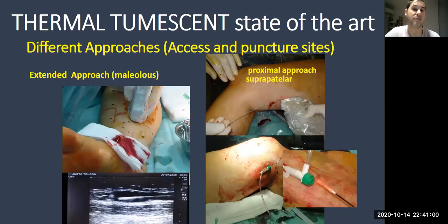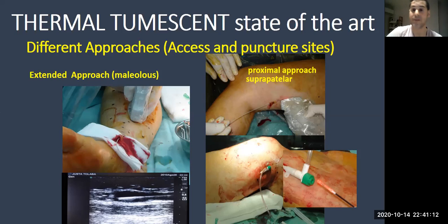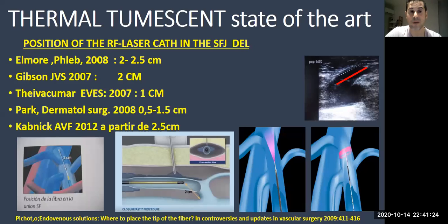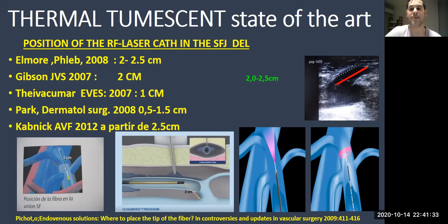There are different approaches and access puncture sites. We have the extended approach into the vein with a distal malleolus entry and the suprapatellar access. Which access is chosen depends on the distal reflux point found in the pre-operative ultrasound mapping. For radiofrequency or laser, the catheter should be placed 2 to 2.5 cm from the junction.